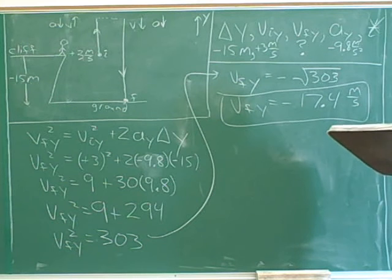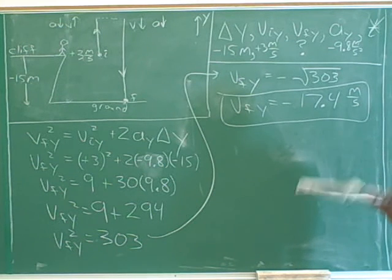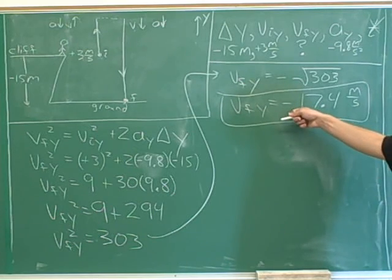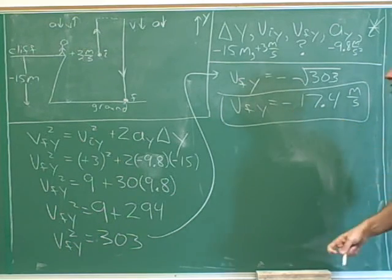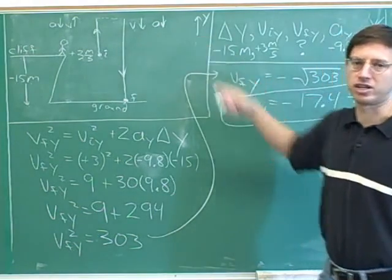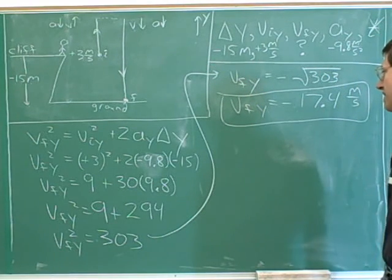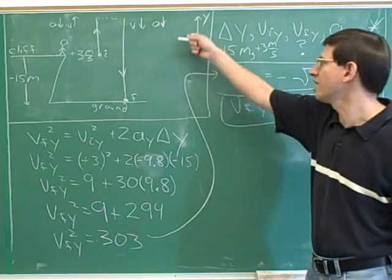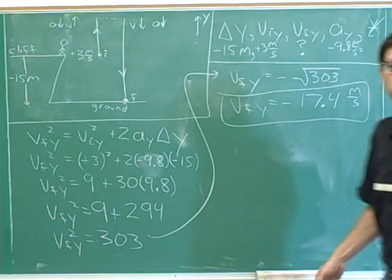So the answer to the question: the velocity with which the object strikes the ground is negative 17.4 meters per second. Of course, that only makes sense to your reader if they know you chose up as the positive direction. So if you state the final velocity is negative 17.4 meters per second, you must also clearly indicate that up is your positive direction.